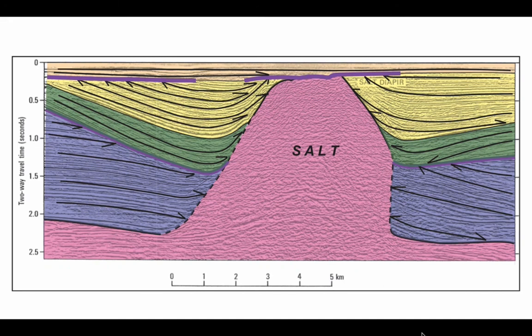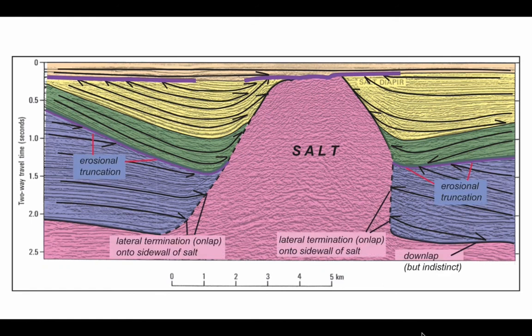Further down, the internal reflectors of the mauve unit onlap the margins of the salt. Admittedly it's indistinct, but they must pinch out against the salt body regardless of wherever we put the boundary of the salt. There's also on the right hand side what looks like lapping onto the base of the mauve unit against the salt where it remains more or less horizontal. So erosional truncation on the top of the mauve unit by an unconformity, lateral termination onlap onto the side walls of the salt, and apparent downlap, maybe tilted onlap, but it's indistinct against the lower part of the salt layer.